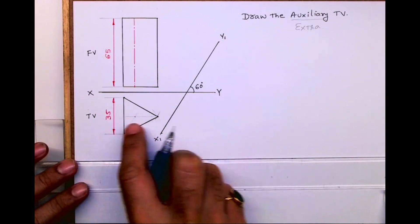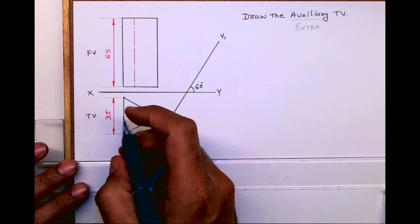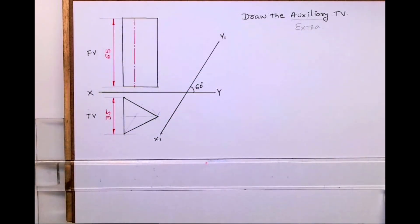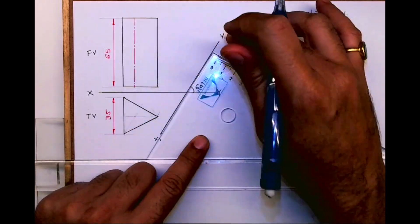So we need to draw extra top view which will come next to top view. So you draw front view, top view as it is. Such kind of sums are there in engineering drawing and technical drawing ICSE.